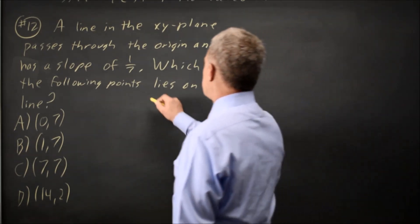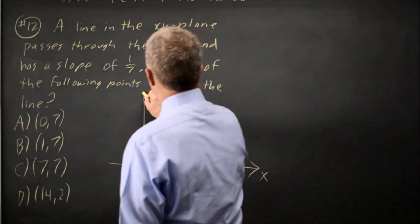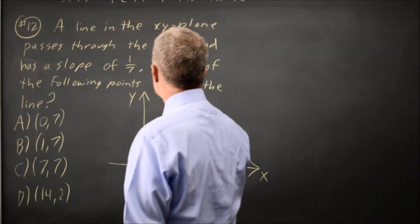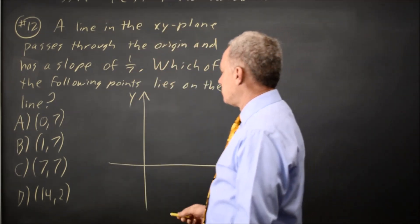One of the easiest ways to do this is to sketch a graph in the xy plane because we're familiar with slope, and we know that a slope of 1 seventh is a positive slope and it's shallow.